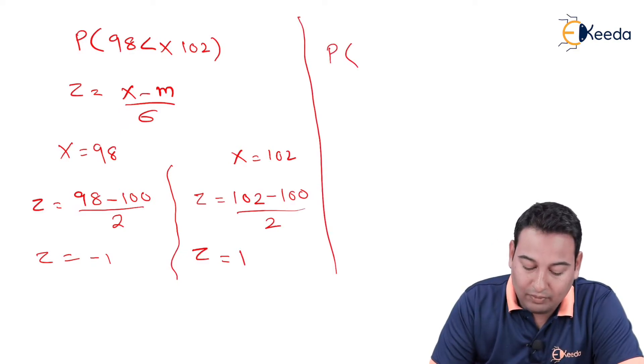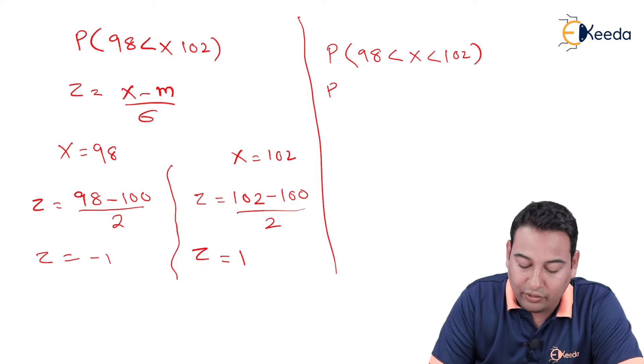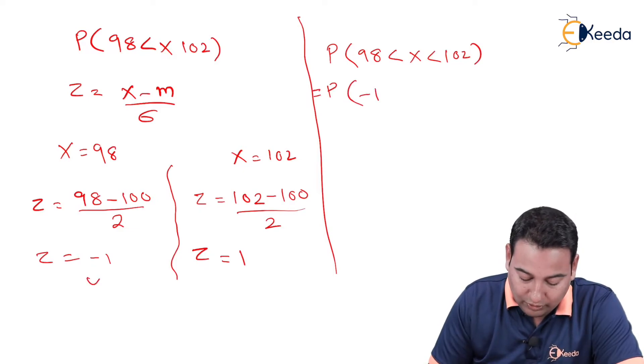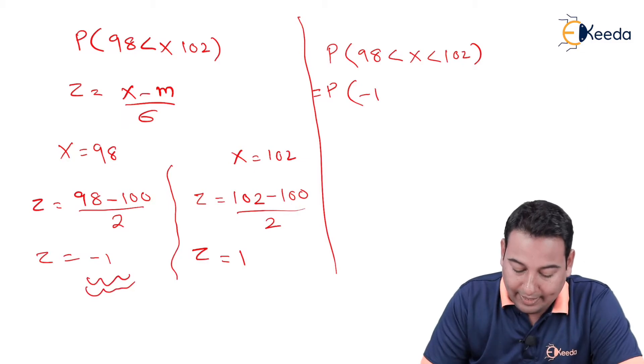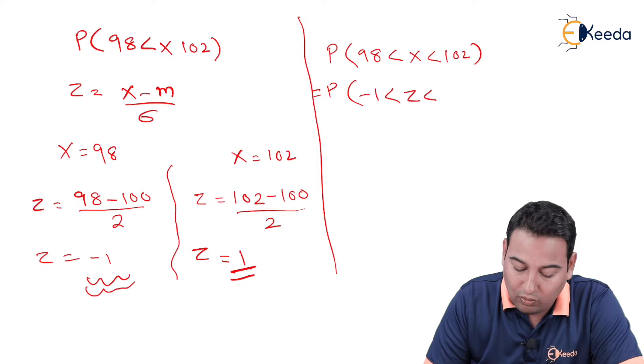Original problem is probability between 98 and 102. This got converted into 98 got converted into minus 1, and 102 got converted into 1. That means between minus 1 and 1.